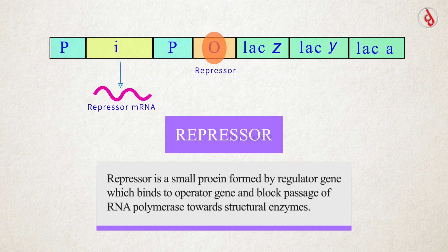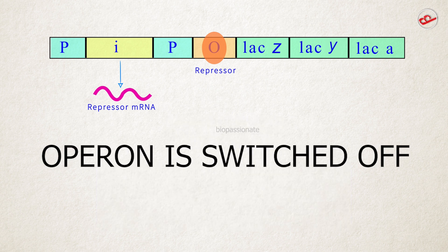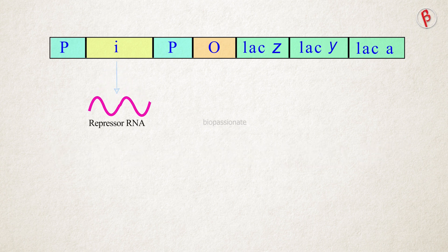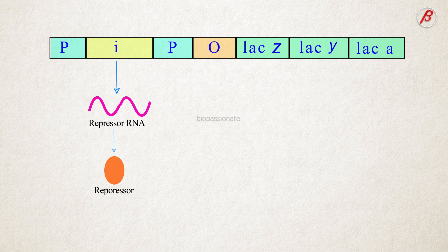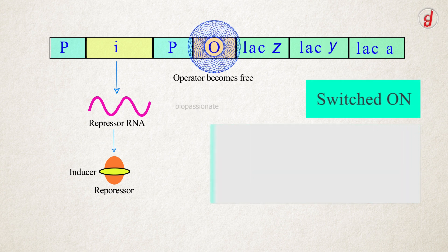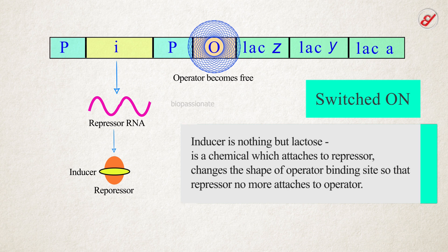Once the repressor binds to the operator, the operon becomes switched off. In the presence of inducer, which is lactose, it attaches to the repressor and changes the shape of the operator binding site. Then the operator becomes free. As soon as the operator gene becomes free, RNA polymerase is recognized by the promoter gene.